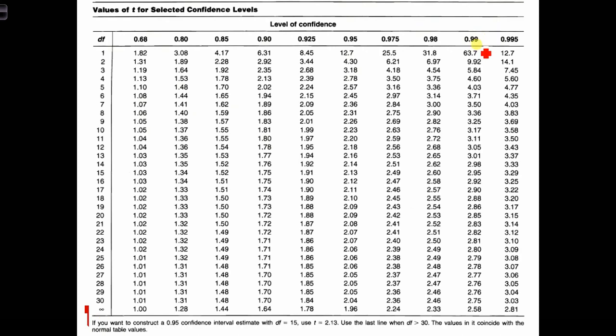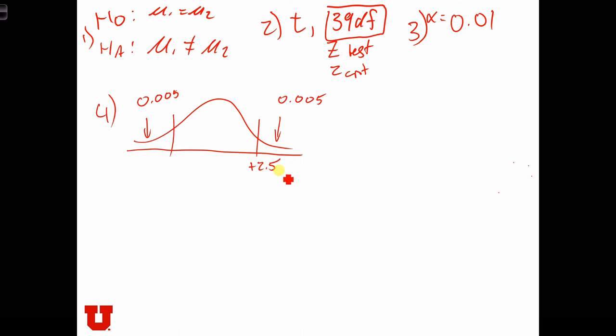Let's use our table. In order to have half a percent in each tail, we're going to use the 99% level of confidence, right? Because that is going to put half a percent in each tail. We're using a t-distribution with 39 degrees of freedom, which is essentially the same as a normal distribution. So we've got 2.58 as our critical values. Minus 2.58. And anything in this range or in this range will cause us to reject.